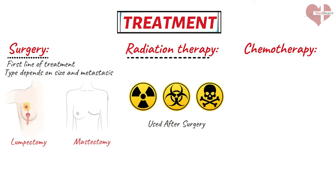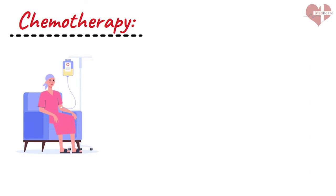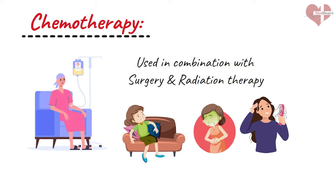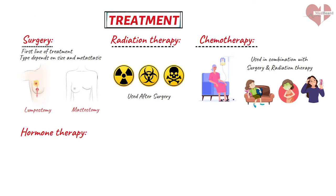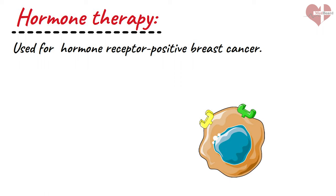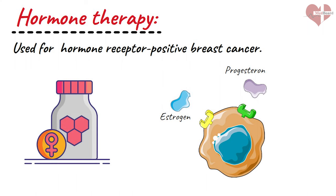Chemotherapy uses drugs to kill cancer cells throughout the body. It is often used in addition to surgery and radiation therapy for patients with more advanced breast cancers, and can cause side effects such as fatigue, nausea, and hair loss. Hormone therapy is used for patients with hormone receptor-positive breast cancer, meaning the cancer cells have receptors for estrogen or progesterone. Hormone therapy works by blocking the effects of these hormones or reducing their production, which can help slow or stop the growth of cancer cells.